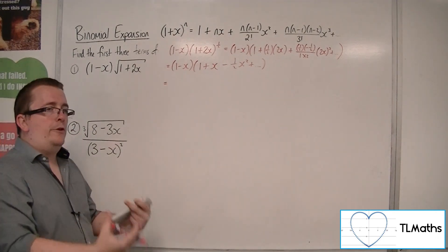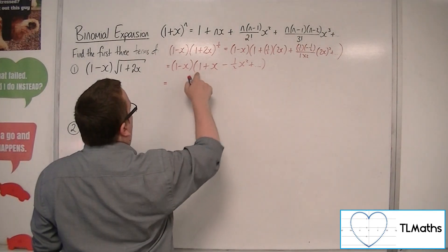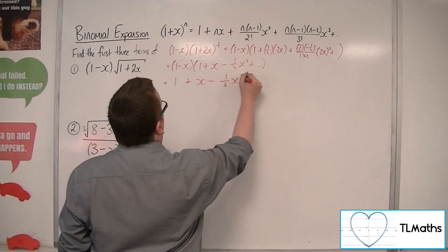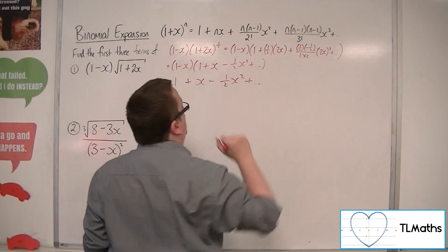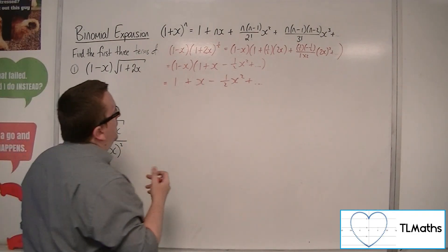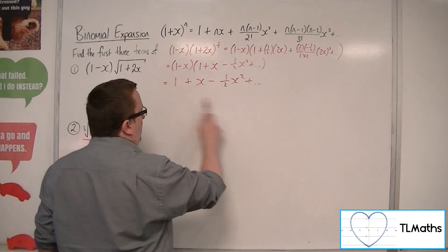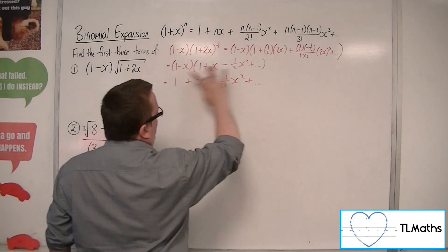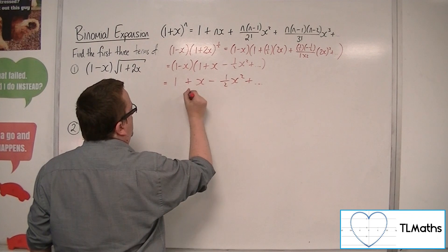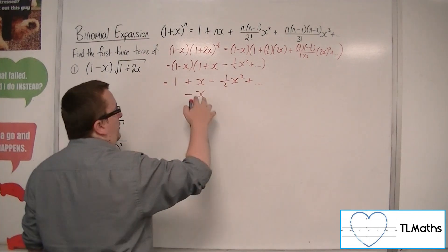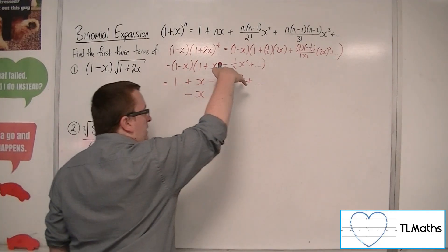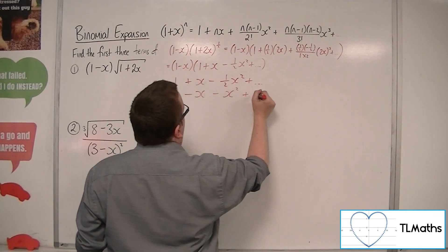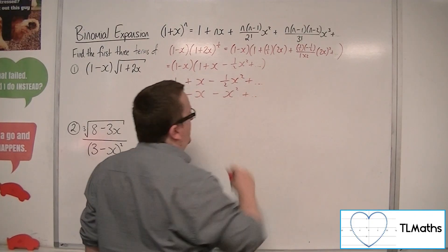So: 1 times 1 is 1; 1 times x is x; 1 times minus one-half x² gives minus one-half x squared, plus the rest of the terms which I don't need. It's a good idea to do this in rows to make it easier to combine at the end. Then multiplying minus x by each term: minus x times 1 gives minus x, placed under the linear term; minus x times x is minus x squared. Minus x times the squared term gives a cubic, so I'm not interested in that.